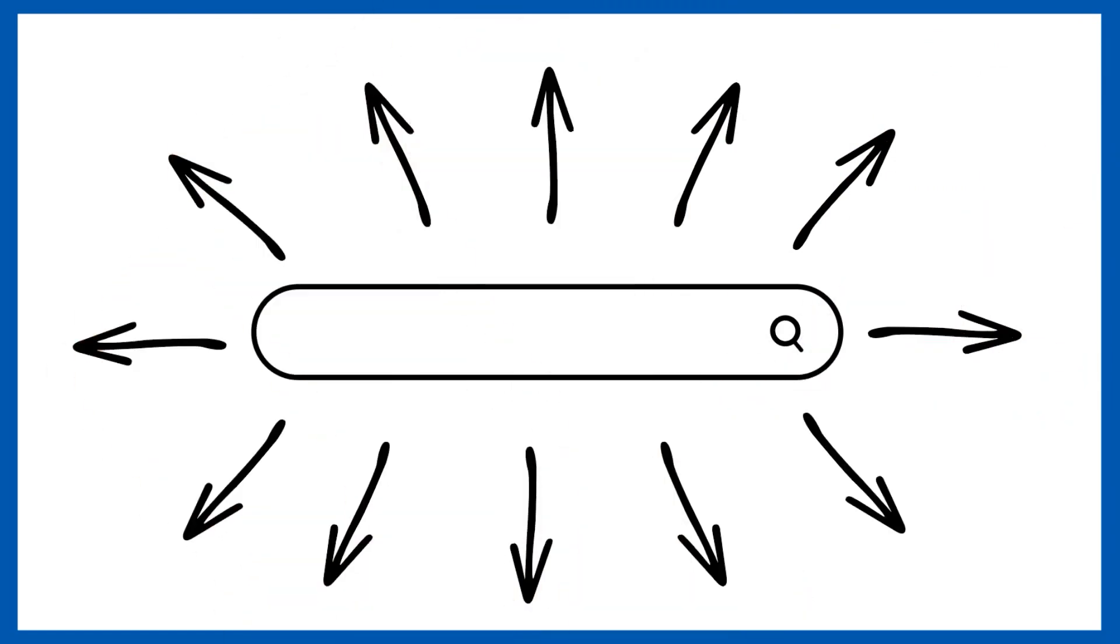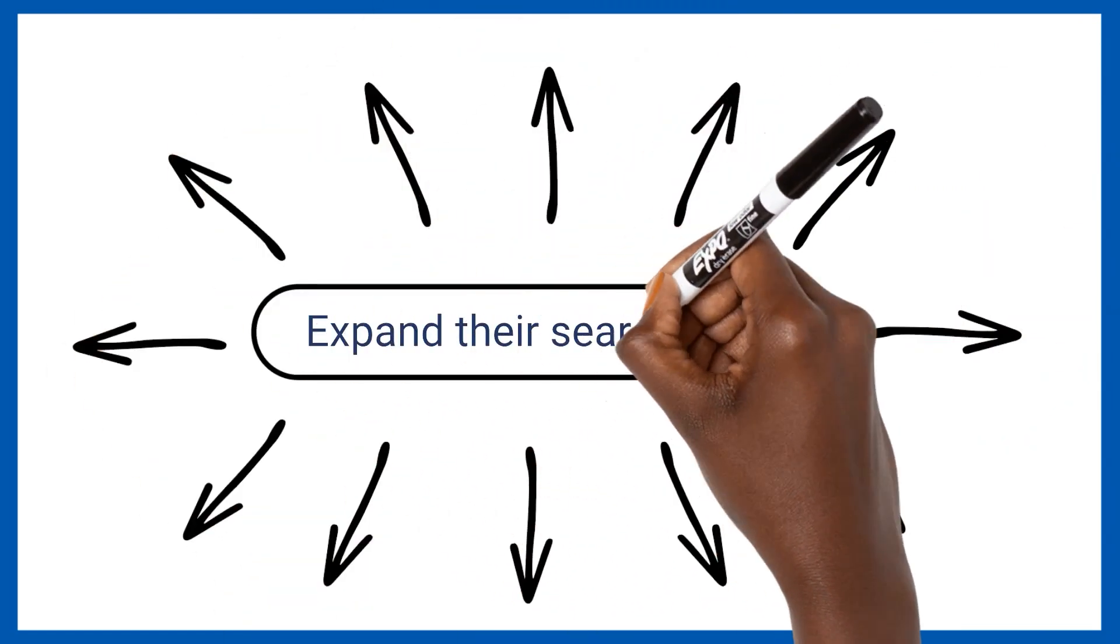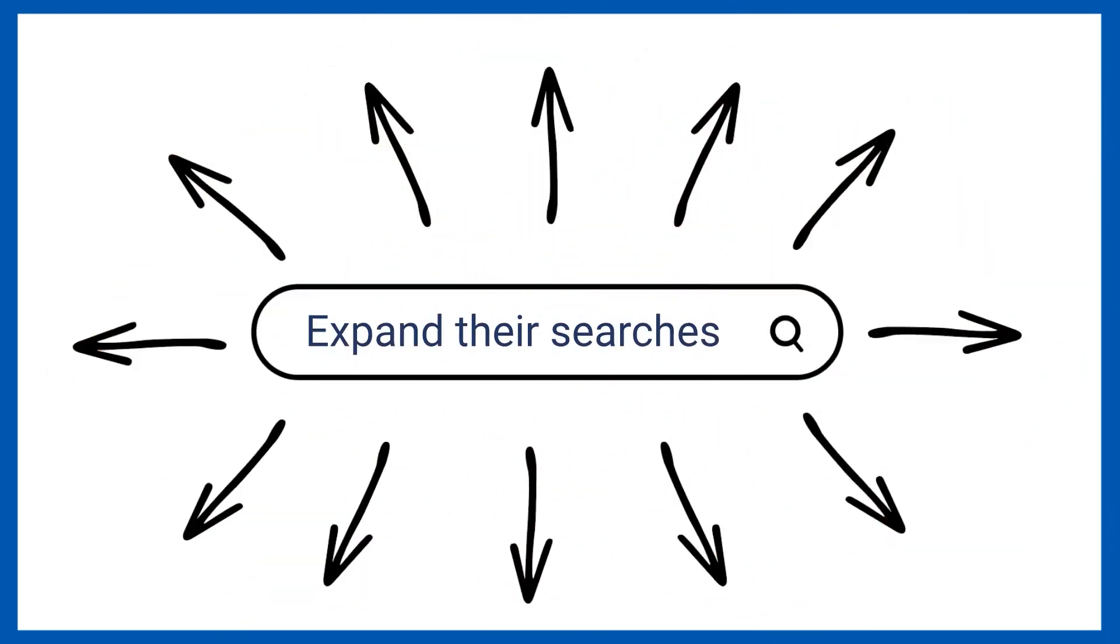Truncation and wildcard systems allow users to expand their searches to incorporate different word spellings and endings.